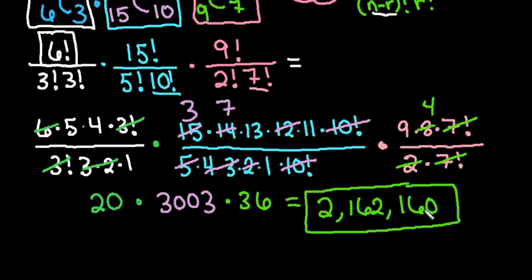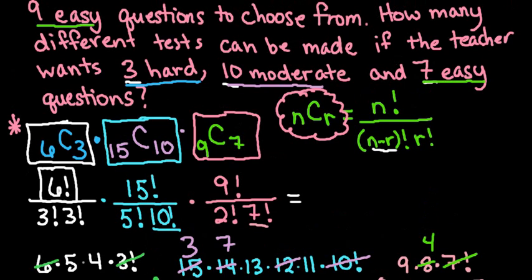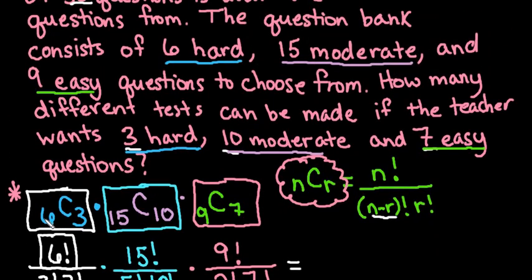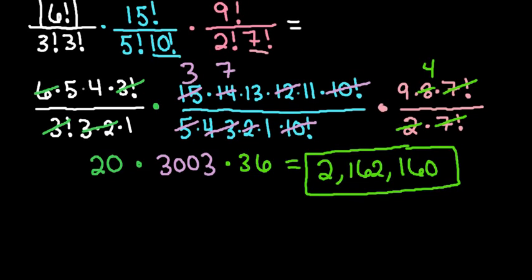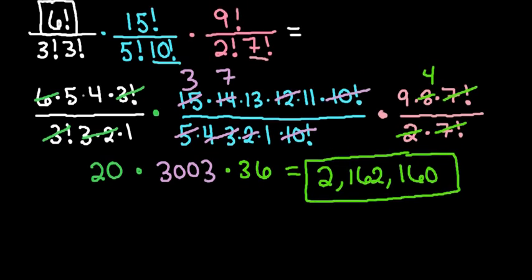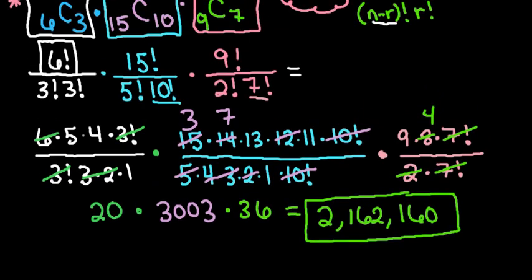So that means that the test questions were reordered. And remember that this also met the criteria that we had to have 6 or out of our 6 hard questions we had to select 3 of them. Out of our 15 moderate questions we had to select 10 of them. And out of the 9 easy questions we had to select 7 of them. So we have a total of 2,162,160 different combinations that can be made for this test.